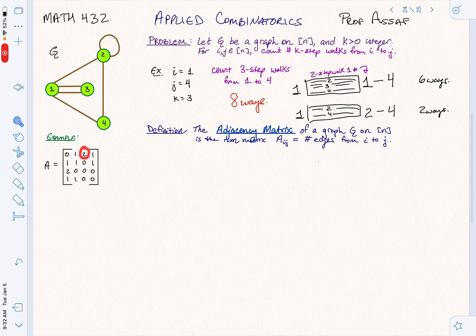The ijth entry tells me the number of edges from i to j. So this entry two here tells me there are two edges from one to three. Of course, it's the same as this entry down here, because there are two edges from three to one. That's because my graph is undirected. That's going to make my matrix symmetric. If my graph were directed, then I'd really want to take edges just from i to j, and then my matrix wouldn't necessarily be symmetric.